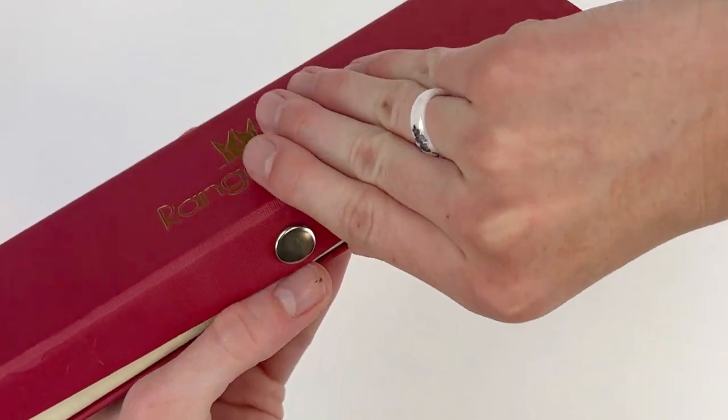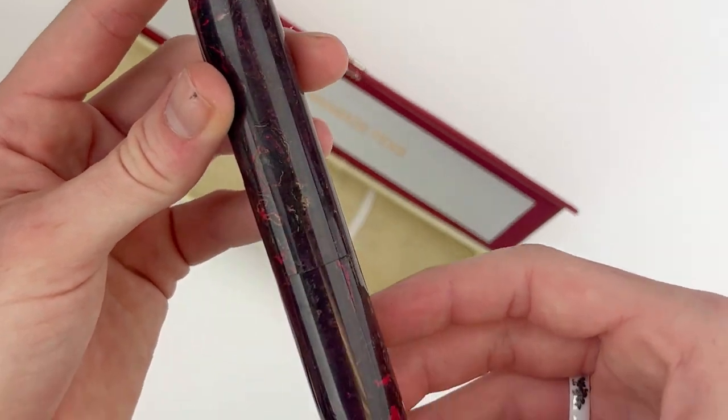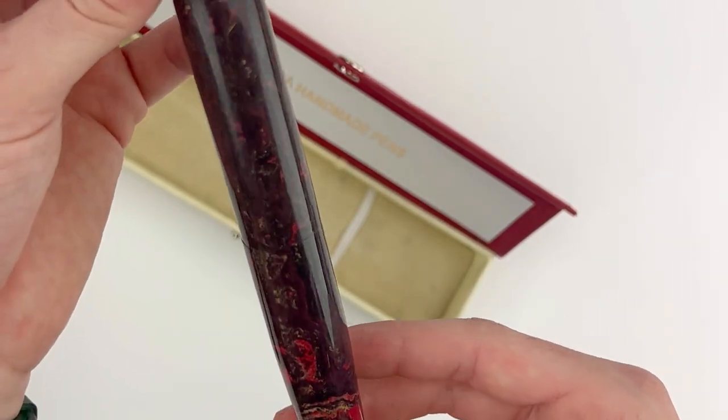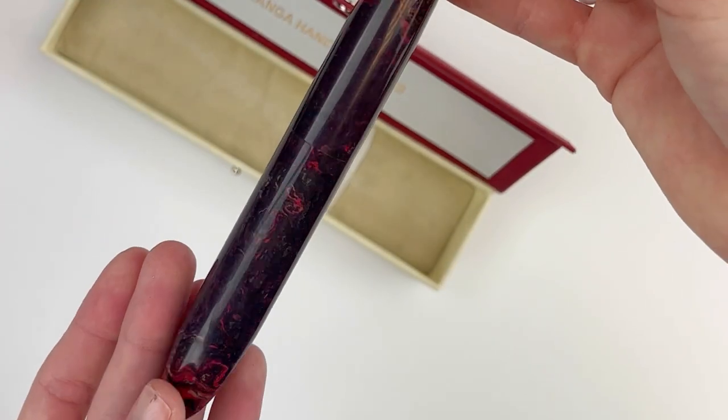Today we're doing an unboxing of the Ranga Giant 9B Fountain Pens. This pen is known to be the king of oversized ebonite fountain pens, so if you love oversized, bigger pens and also ebonite, this is the perfect fountain pen for you.